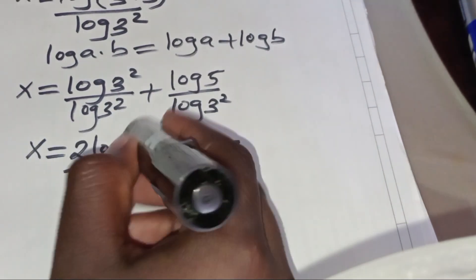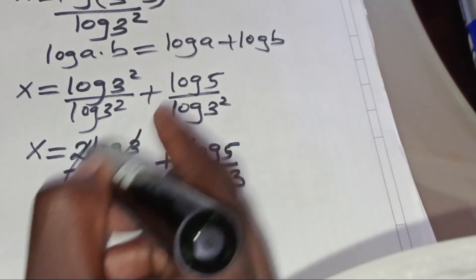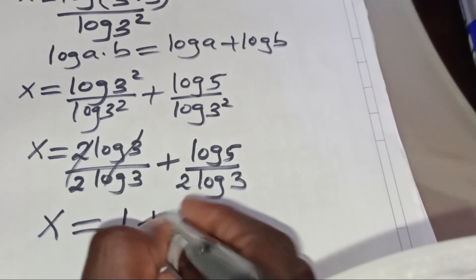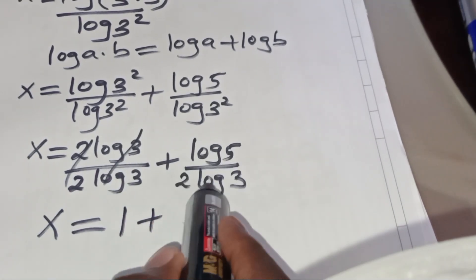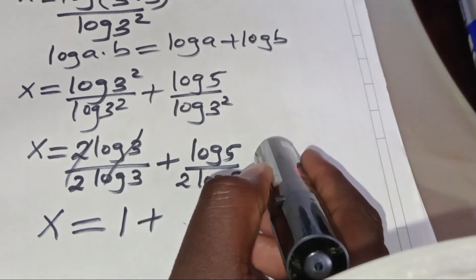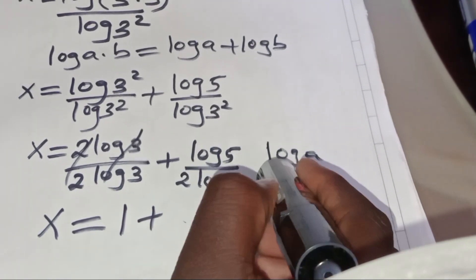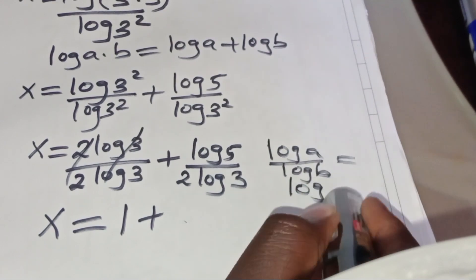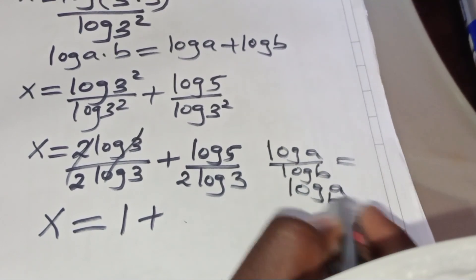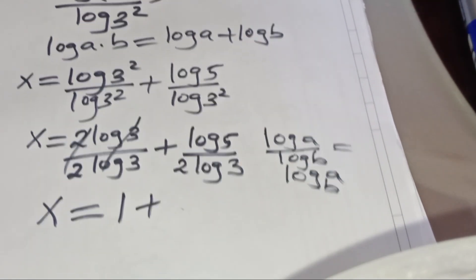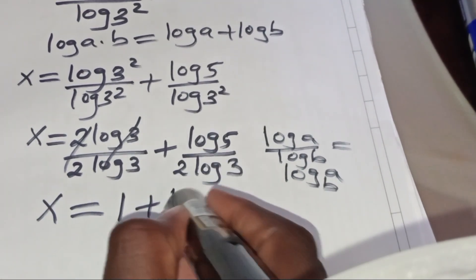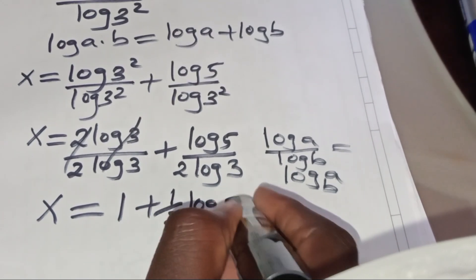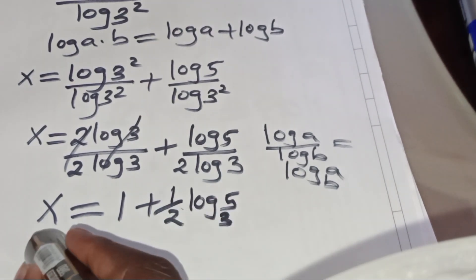Simplifying, we get x equals 1 plus log 5 divided by 2·log 3. Now, log 5 divided by log 3 is in the form of log A divided by log B, which we can express as log A to base B. Applying this property, the value of x equals 1 plus one-half log 5 to base 3.